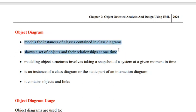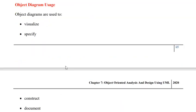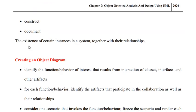At a particular point in time. In order to realize a particular scenario, what we require is a set of objects to interact with each other. So an object diagram represents a set of objects and the relationships established between them at a given point in time. In simple terms, object diagram represents the set of objects and the links that allow the objects to interact with each other. This implies that object diagram can be used for visualizing, specifying, constructing, and documenting the existence of certain instances in a system together with their relationship.